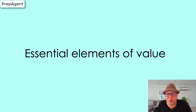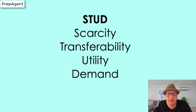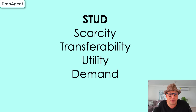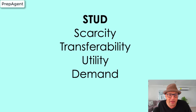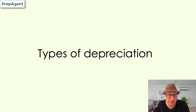The next concept you absolutely must know is the essential elements of value. I like to remember the acronym STUD: scarcity, transferability, utility, and demand. Some people remember the acronym DUST — demand, utility, scarcity, transferability. Either way, remember the four elements: scarcity — how much of it is there? Transferability — can you sell it? Utility — can you use it? And demand — do people even want it? Those are the four essential elements of value.